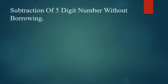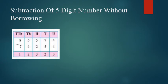Now we have the subtraction of 5-digit numbers without borrowing. Here we have one more column, that is the 10,000s column. You have to arrange these numbers according to its places — in the 10,000s column, 1000s column, 100s column, 10s and units. The number is 86,574 minus 74,254. Now we have to subtract units from units, 10s from 10s, 100s from 100s, 1000s from 1000s and 10,000s from 10,000s.